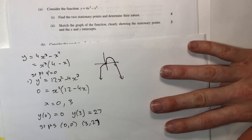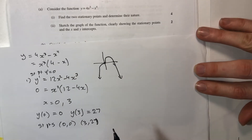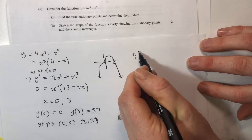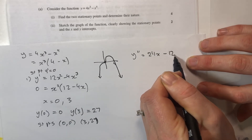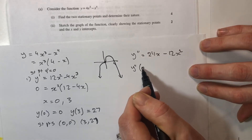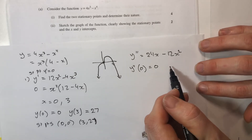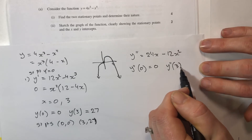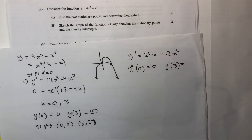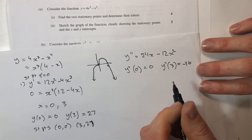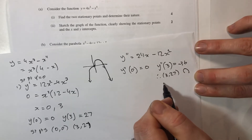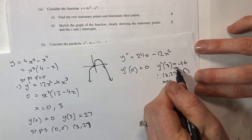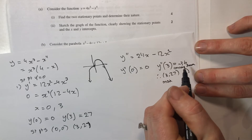To determine the nature of each stationary point, I'll use the second derivative — it's the simplest method. Y double dash equals 24x minus 12x squared. The second derivative at x equals 0 is 0, which is inconclusive. The second derivative at x equals 3 is 24 times 3 minus 12 times 9, which equals 72 minus 108, equalling negative 36. Therefore (3, 27) is a maximum, as the function is concave down.